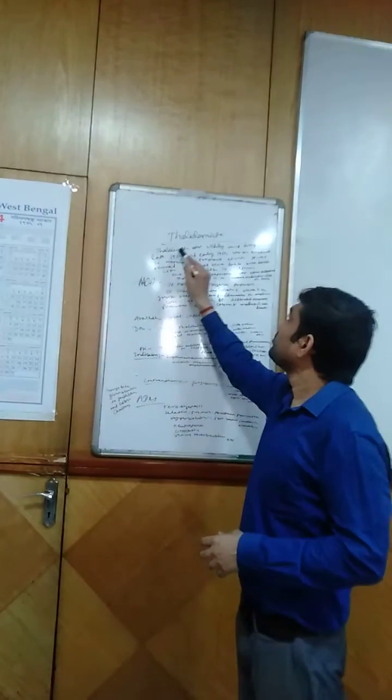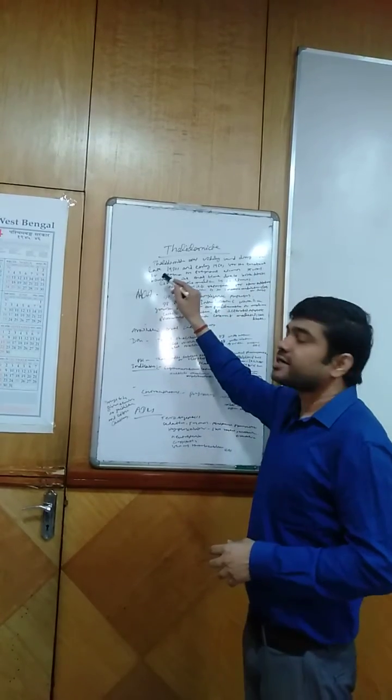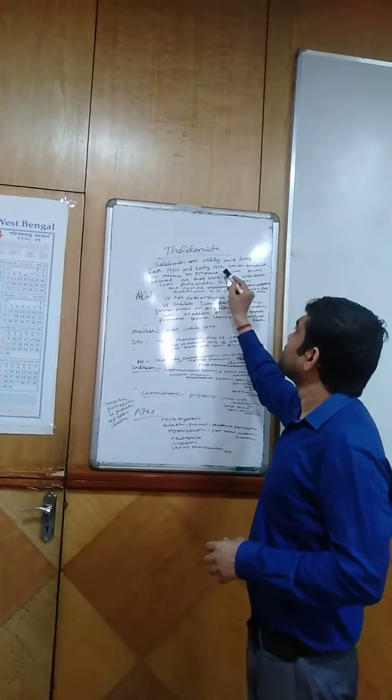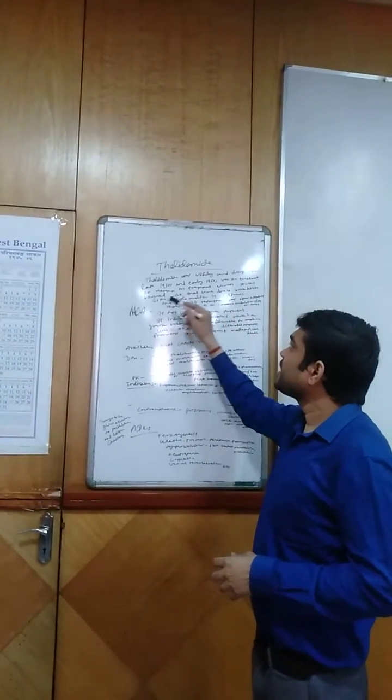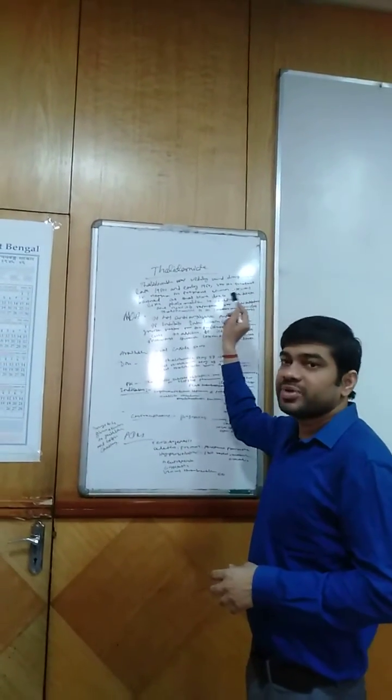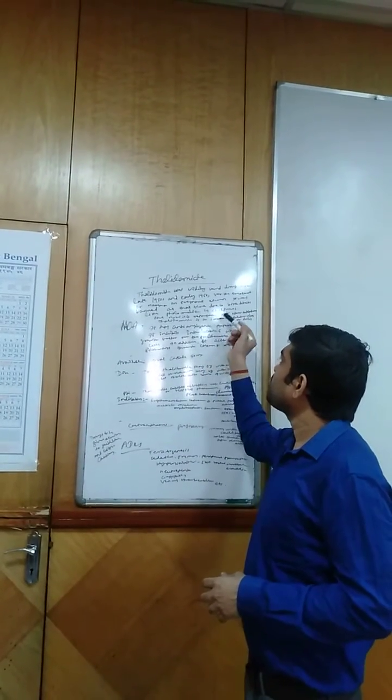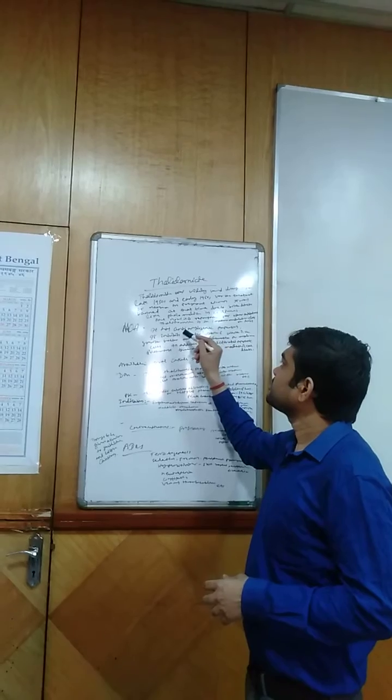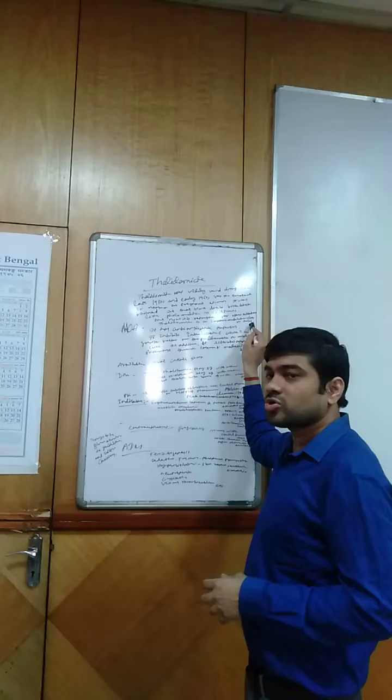We all know that Thalidomide was widely used in the late 1950s and early 1960s for the treatment of nausea in pregnant women. It was banned at that time due to adverse effects like phocomelia in children. But now it is repurposed for other indications and Thalidomide is in the immunomodulatory class of drugs.